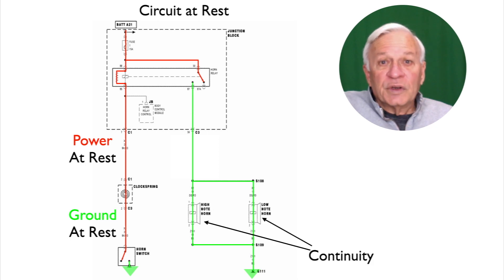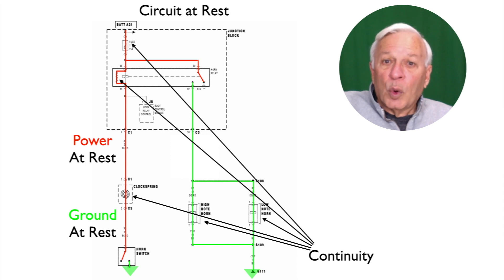The horns have continuity so the ground will come to them and pass right through them. On the power side the fuse, the coil inside the relay, and the clock spring all have continuity, so the power will come to them and pass right through them as well.